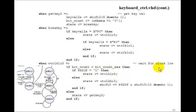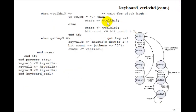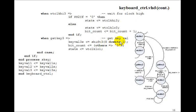Wait clock low three shifts data into the shift three register, working the same way as the others. Wait clock high three either stays in state or goes to wait clock low three, incrementing the bit count. Finally, in get key three, key_val_three comes from shift three bits 8 down to 1. Then we take those signals and assign them to key_val_one, key_val_two, and key_val_three. That's the keyboard controller.